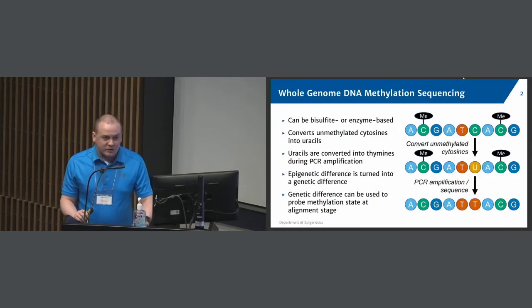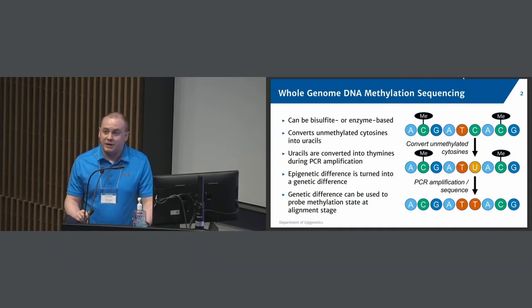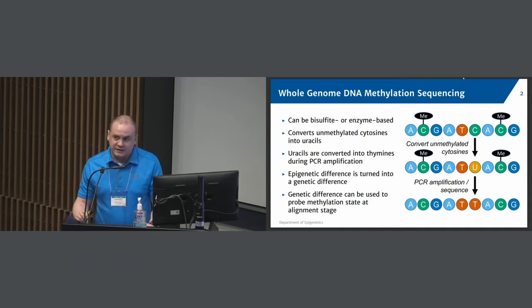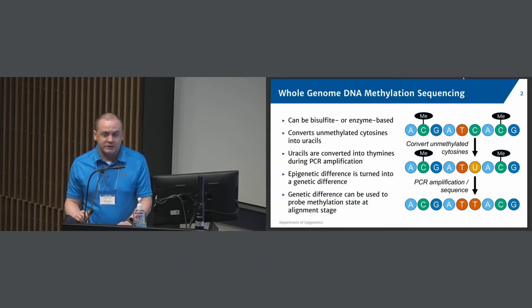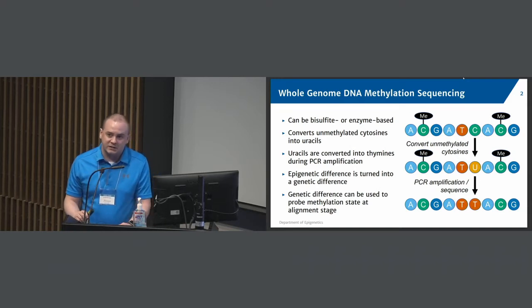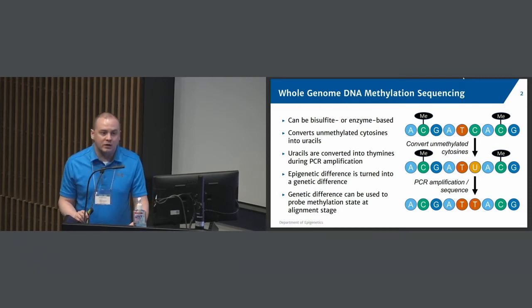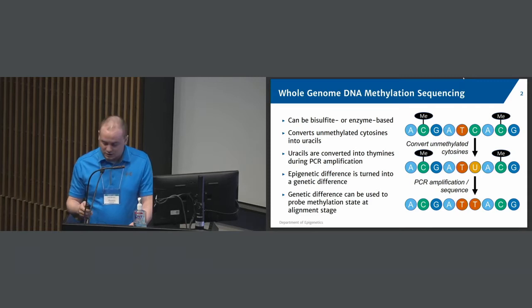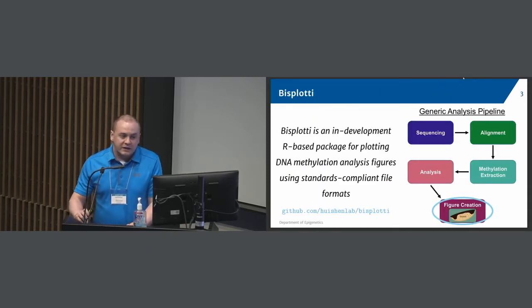So just as a very brief overview, for those of you who don't know what DNA methylation sequencing is, this can either be bisulfite-based or enzyme-based. An unmethylated cytosine will be converted into a uracil during this process, whereas a methylated cytosine will be left as a C. The uracils are then turned into thymines during PCR amplification. And what happens here is that the epigenetic difference that you start with is then turned into a genetic difference, which you can probe using sequencing and then tell during the alignment stage where your methylated and unmethylated cytosines are occurring.